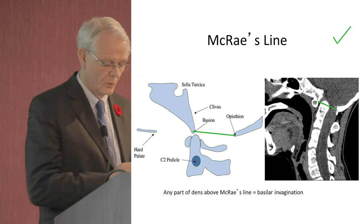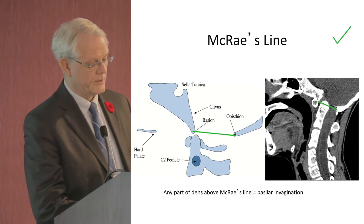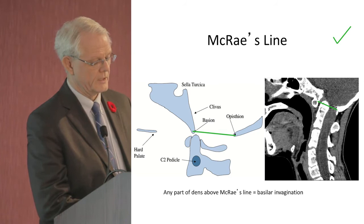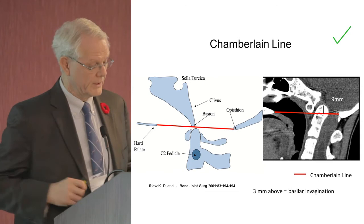McCray's line is an older measurement where, in a side view, you measure from the tip of the clivus to the back of the foramen magnum. If the odontoid process of C2 goes above that line, it's indicative of basilar invagination, which is seen in cranial settling in EDS patients. Chamberlain's line draws from the hard palate to the back of the foramen magnum — again, if the odontoid process goes above that line, radiologists use this to indicate basilar invagination.